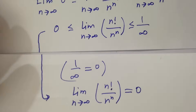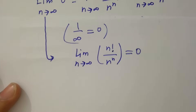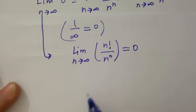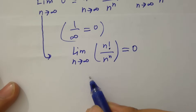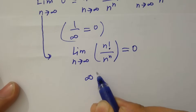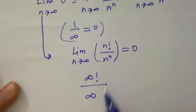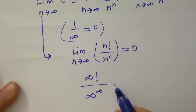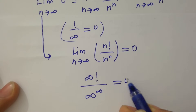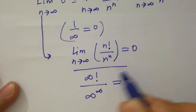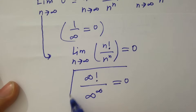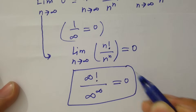Finally, infinity factorial over infinity to the power infinity is equal to 0, which is our final answer.